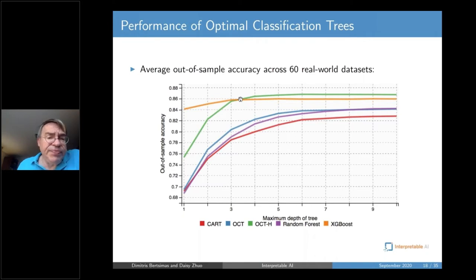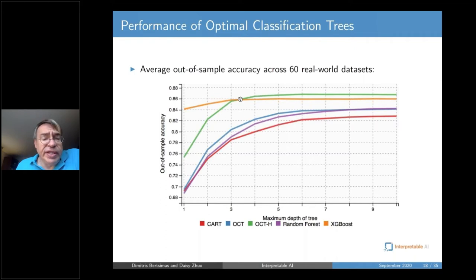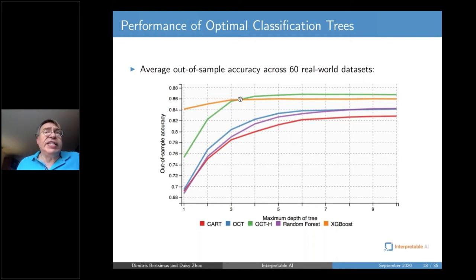This suggests that advances in optimization and understanding of scalability of optimization methods are capable of definitely decreasing — and perhaps even eliminating — the gap or the price you sometimes have to pay in terms of interpretability.